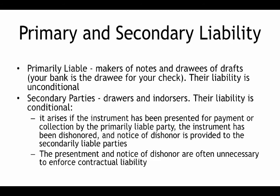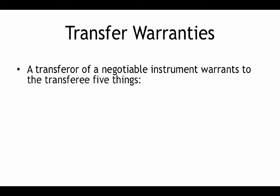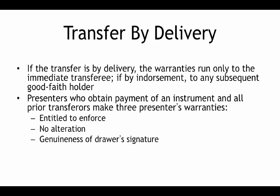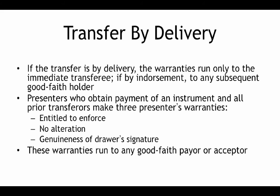Presentment and notice of dishonor are often unnecessary to enforce contractual liability. Then there are warranties — transfer warranties. There are five of them. Transfer of a negotiable instrument warrants to the transferee five things: they're entitled to enforce it, authentic and authorized signatures, no alterations, no defenses, and no knowledge of insolvency. If the transfer is by delivery, the warranties run only to the immediate transferee. If it's by endorsement, to any subsequent good faith holder. Presenters who obtain payment and all prior transfers make three presenter's warranties: entitlement to enforce, no alterations, and genuineness of the drawer's signature. These warranties run to any good faith payer or acceptor.